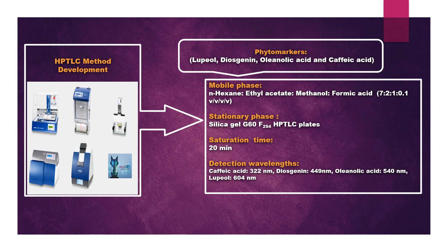The mobile phase optimized was n-hexane, ethyl acetate, methanol, and formic acid in a 7:2:1:0.1 proportion. Saturation time was optimized to 20 minutes. Detection was done for caffeic acid at 322 nm, diosgenin at 449 nm, oleanolic acid at 540 nm.